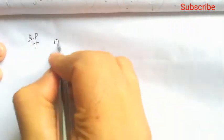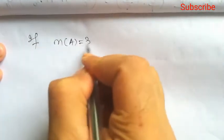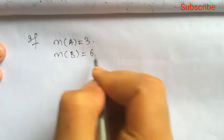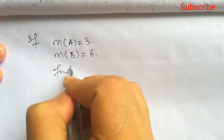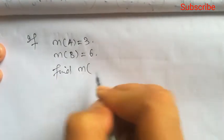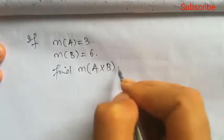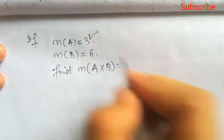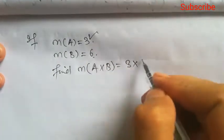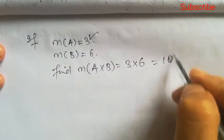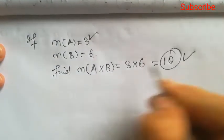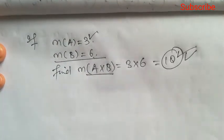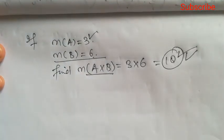If the number of elements in set A equals 3 and the number of elements in set B equals 6, find the number of elements in A cross B. By the formula P times Q: 3 times 6 equals 18. So the number of elements in the Cartesian product is 18.